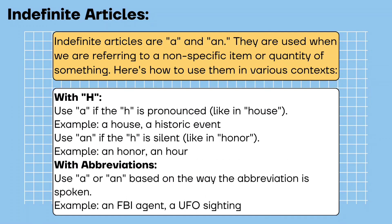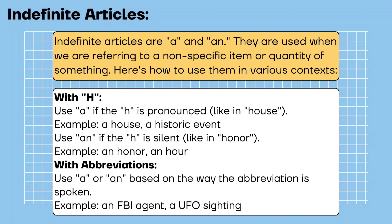With H: use 'a' if the H is pronounced, like in 'house.' Example: a house, a historic event. Use 'an' if the H is silent, like in 'honor.' Example: an honor, an hour. With abbreviations: use 'a' or 'an' based on the way the abbreviation is spoken. Example: an FBI agent, a UFO sighting.